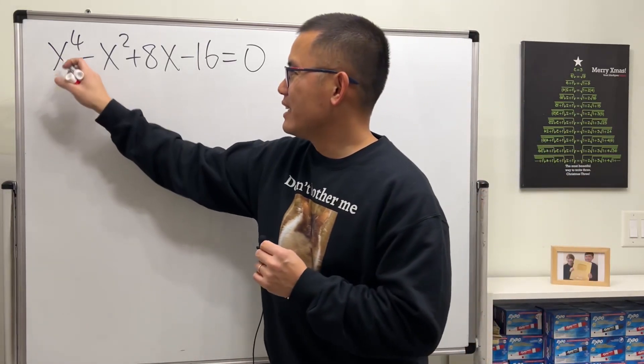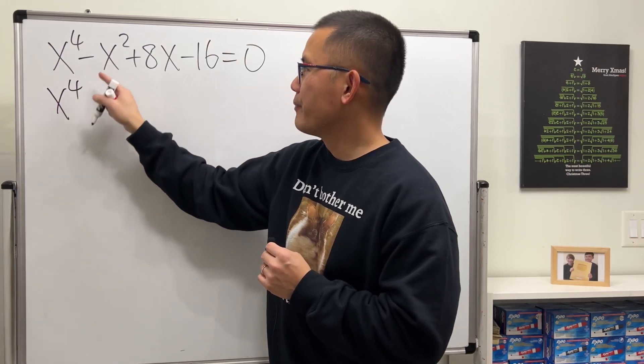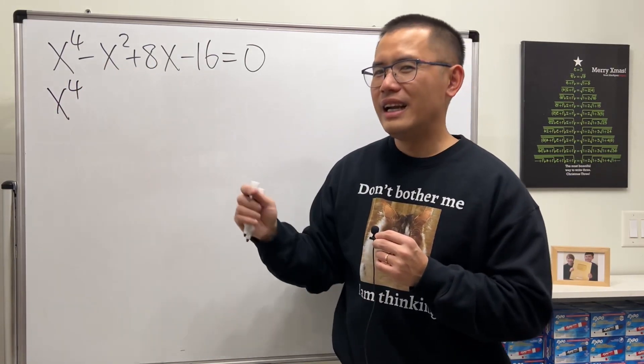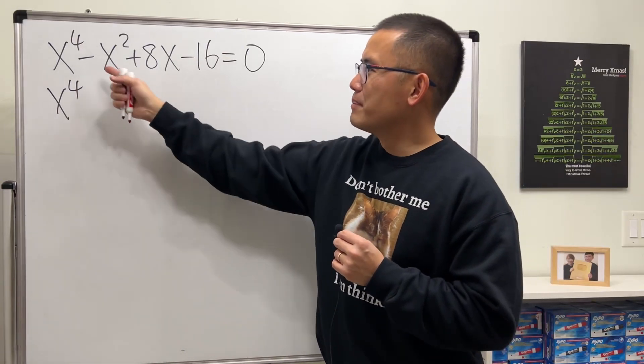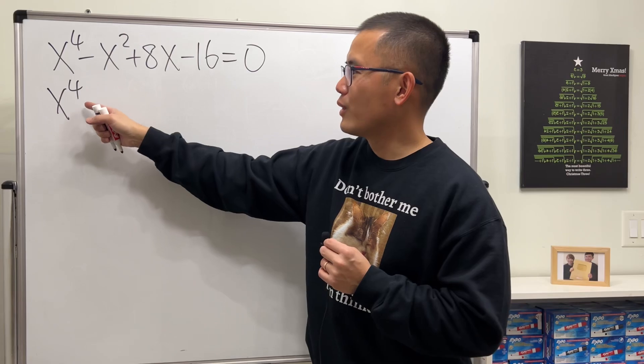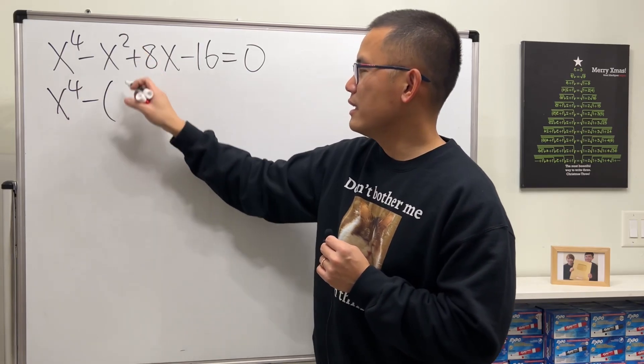Here we have x to the fourth power. Notice these three terms, they look like a perfect square. Yes, but I'm going to factor out negative first. So right here I will put negative and the parentheses so that we get x squared inside, and then minus 8x, and then plus 16.